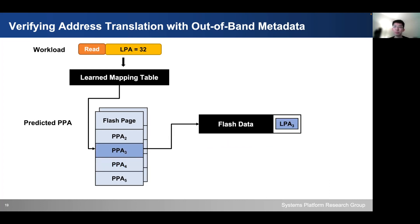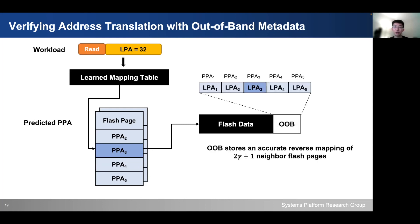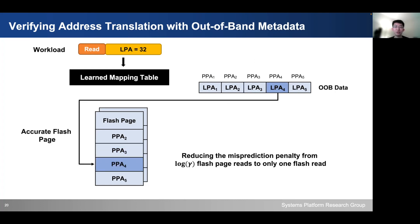To solve this problem, instead of storing the logical address of the flash page itself, we store the accurate reverse mapping of 2γ+1 neighbor flash pages, where γ is the error bound of our learning algorithm. Therefore, by incurring only one extra flash read penalty, we can directly obtain an accurate flash page. This reduces the misprediction penalty from log(γ) flash page reads to only one flash page read.